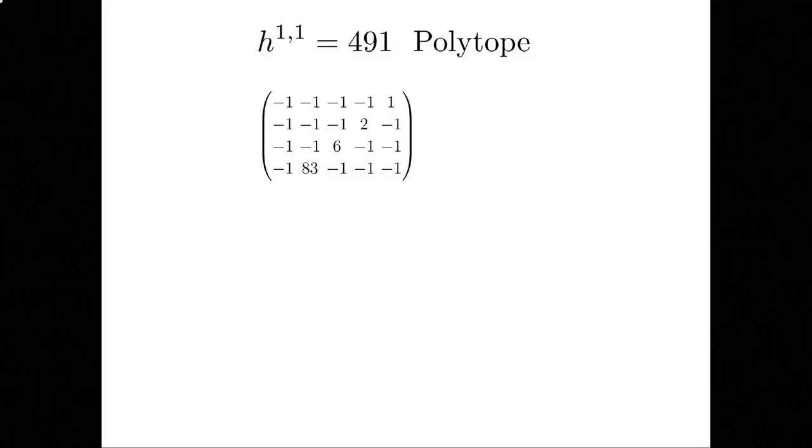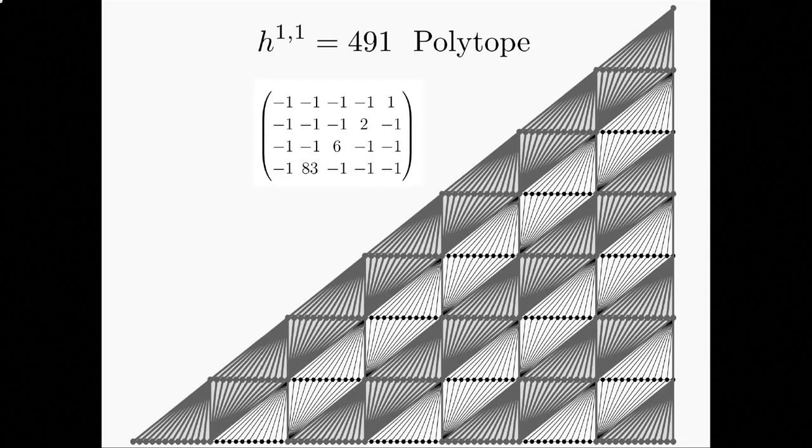So this polytope, it sounds like it's the endpoint of this thing, it's so complicated. It's not actually. So the columns here are the points in Z to the four where its vertices lie. It has five vertices in Z to the four and it's a simplex. So it just has like triangular faces. It's a very, very simple space. Here's its biggest face triangulated. I mean it's a weird patterned triangulation, but that's all we're looking at. We're looking at triangulations of objects like this.